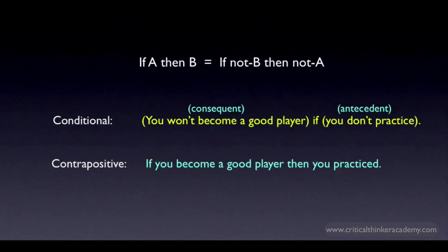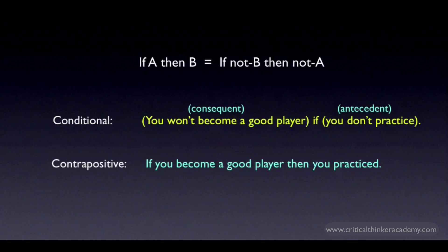This becomes the antecedent of the contrapositive: if you become a good player. Sometimes when you're doing translations, you might want to shift tenses a bit to make a claim sound more natural. In this case, I've written it as 'you become a good player' rather than 'you will become a good player,' but it doesn't make much difference. Once you've got the antecedent of the contrapositive, it's easy to write the consequent: if you become a good player, then you must have practiced.